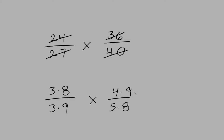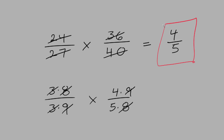Then we can cross out any common factors in the top and bottom numbers. We have a 9 that we can cross out, and we have an 8 that we can cross out, and we also have a 3 that we can cross out. So what we are left with is 4 over 5, which is our final answer.